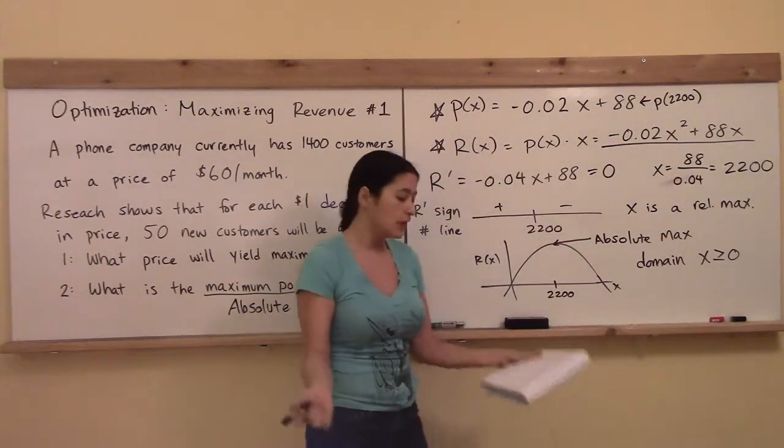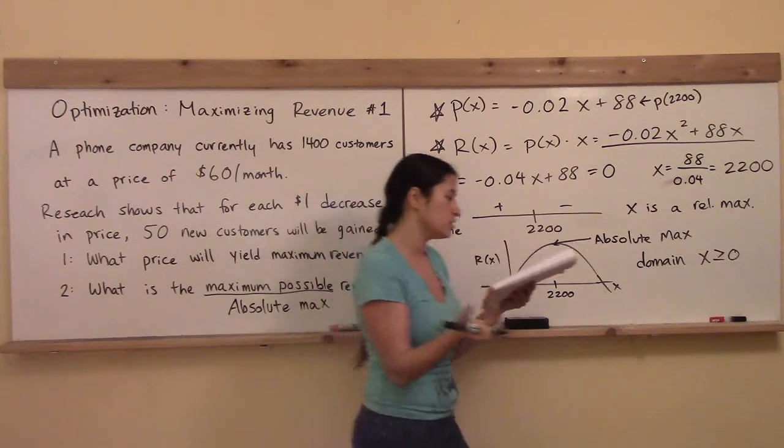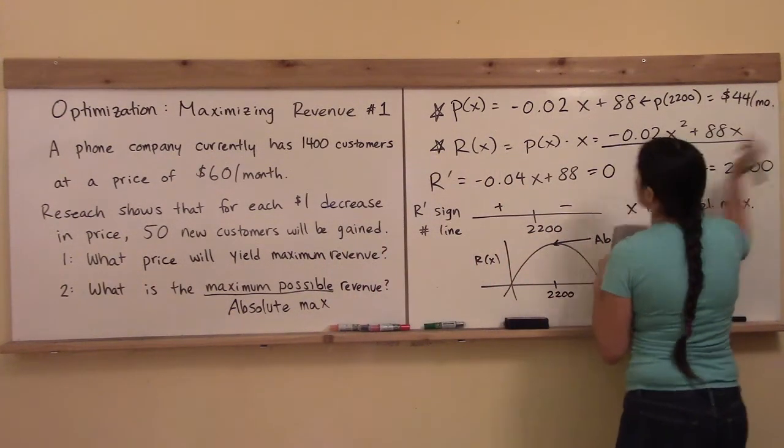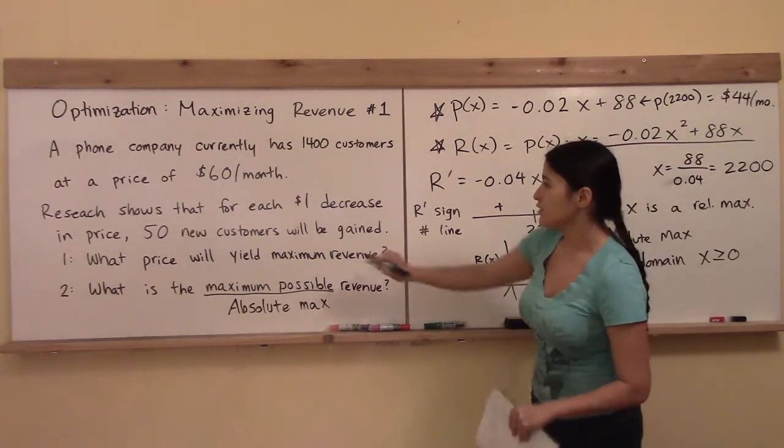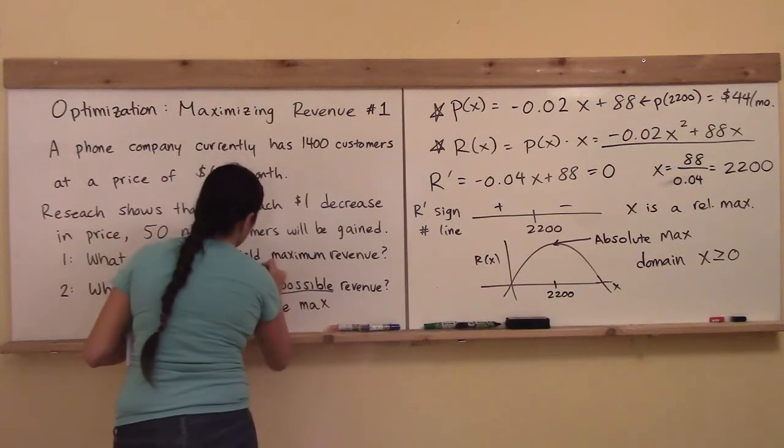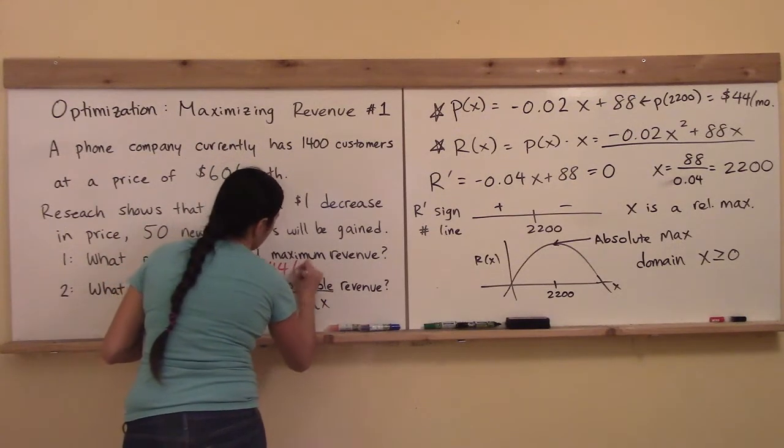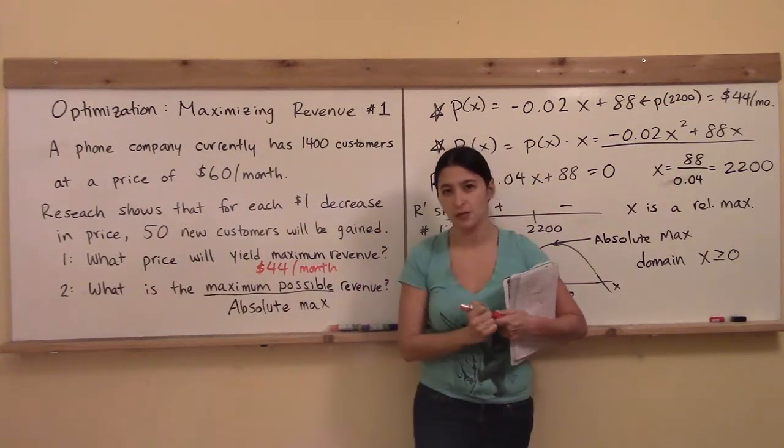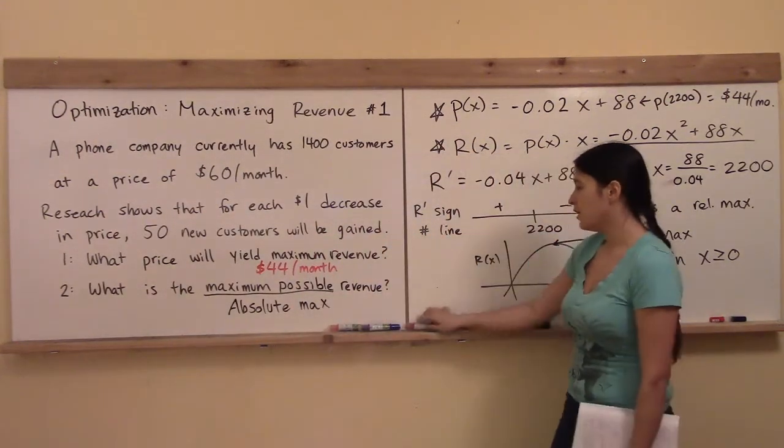What is my price when my number of customers is 2,200? That's $44 per month, because you see it was a monthly price anyway, so what price will yield maximum revenue? The answer to that question is $44 per month. That's the answer to the specific question that was asked of me.